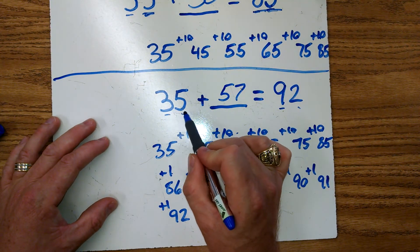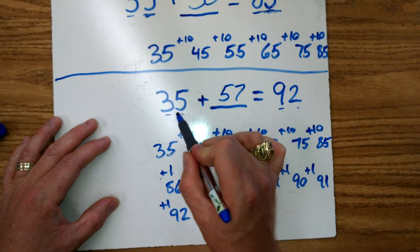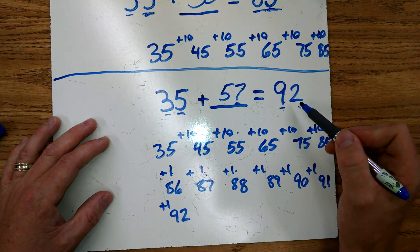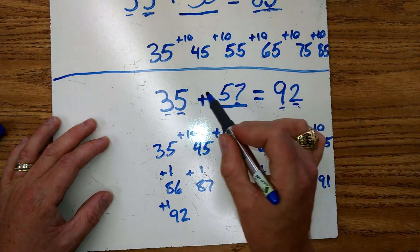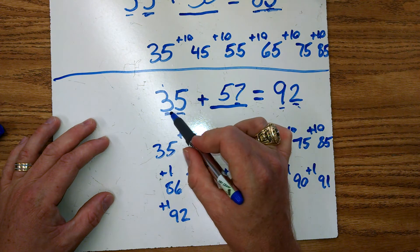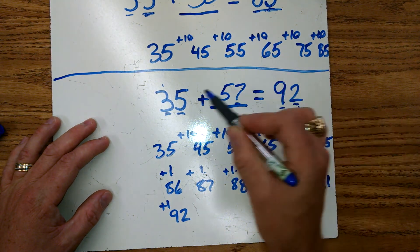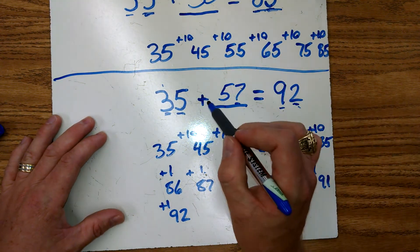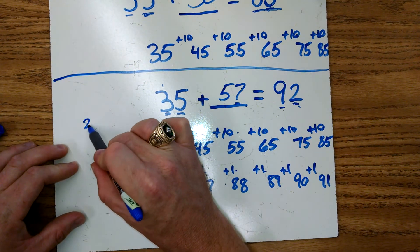So let's make sure we got this right. Five and seven gives us 12, and we'd regroup a ten. Three and five is eight, and one more is nine. Or you can check it by using one of your other strategies.